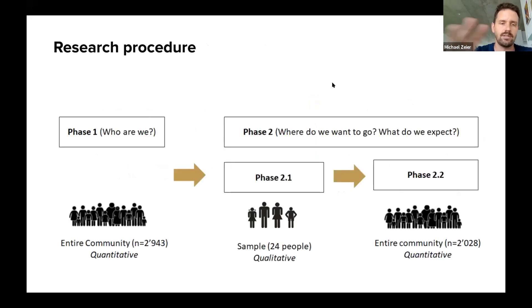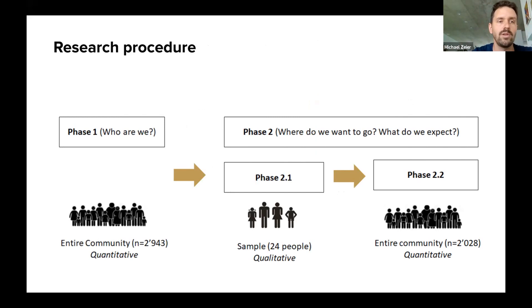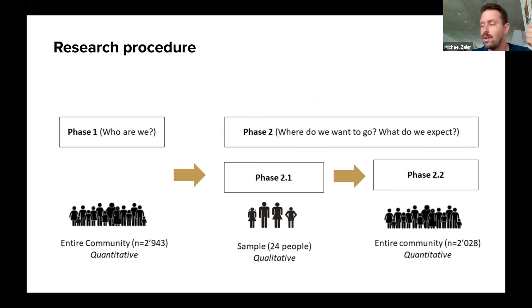We put the research in different phases. We had the whole community — around 10,000 people — but like 2,900 answered the first question, answering questions about their profession, age, sex, family situation, and income.